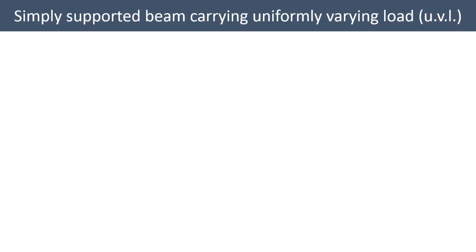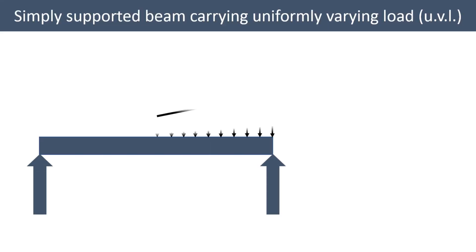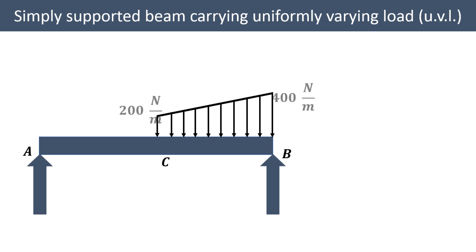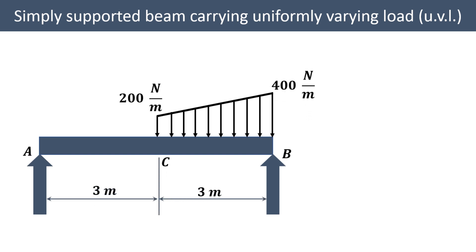The arrangement of the simply supported beam is as shown. The total span length is 6 meters and there is a uniformly varying load from 200 Newton per meter up to 400 Newton per meter from C to B. Our job is to convert this particular arrangement into the UDL and UVL form.